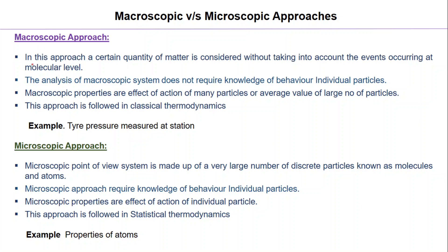In the macroscopic approach, a certain quantity of matter is considered without taking into account events occurring at the molecular level. The analysis of a macroscopic system does not require knowledge of individual particles, since we are not concentrating at the molecular level. We need not know what individual particles make up the system — we just know the average property of the system and are not bothered about the particles inside.